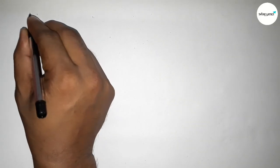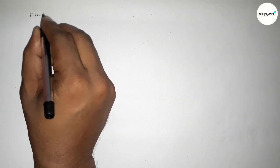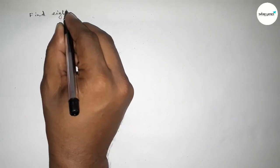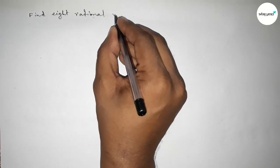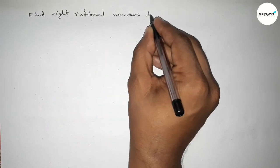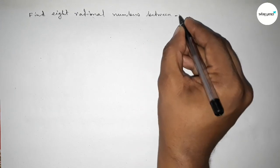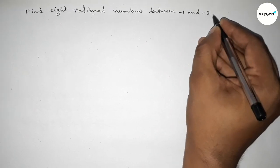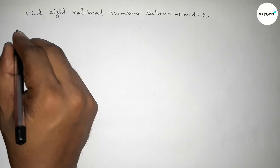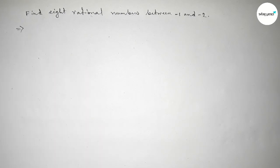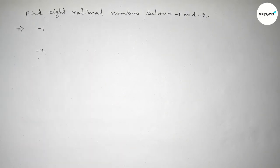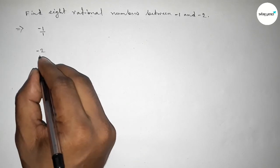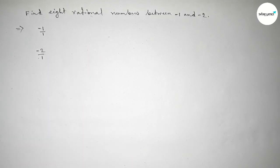Hi everyone, welcome to SSR Classes. Today in this video we have to find out 8 rational numbers between minus 1 and minus 2. So let's start. First of all, write down the given two numbers: minus 1 and minus 2. We can write minus 1 as minus 1 over 1, and minus 2 as minus 2 over 1.